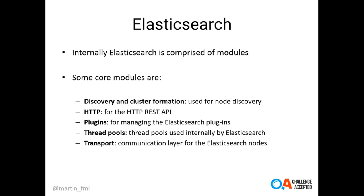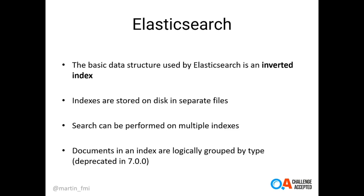Internally, Elasticsearch is comprised of different modules. Some of the core modules are Discovery and Cluster Formation, which provides capabilities for nodes in an Elasticsearch cluster to communicate and discover each other. There is an HTTP module that provides the REST-based API. There are other modules like Plugins, which allow you to build different plugins — the ecosystem contains a large number of plugins developed both by Elasticsearch and the community. Other internal modules include Thread Pools and Transport, which provide capabilities for executing tasks internally and an additional communication layer for Elasticsearch nodes.